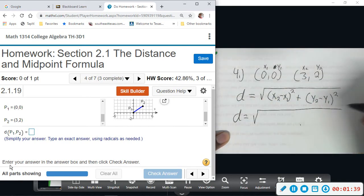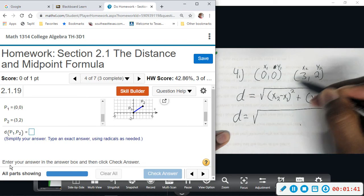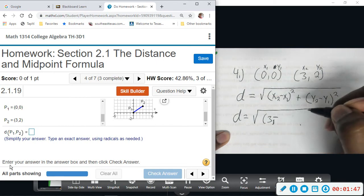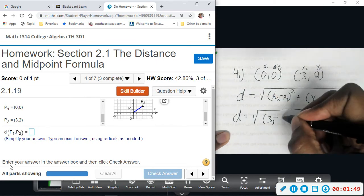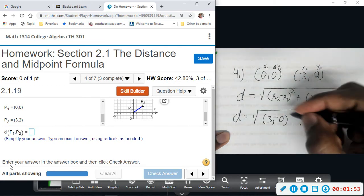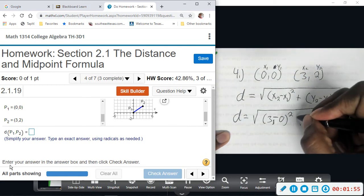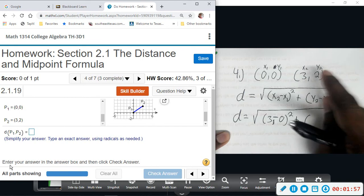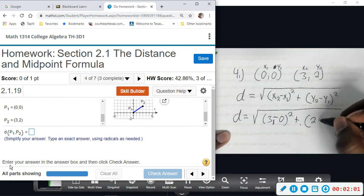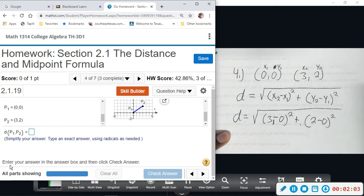Square root. So X2 is 3 minus X1, which is 0. So the first two points, this minus this, 3 minus 0. This is going to get squared. We're going to add to that the two Y values, so it will be 2 minus 0. This gets squared.